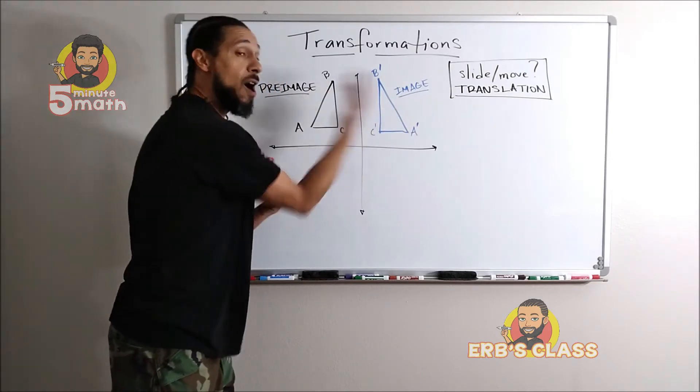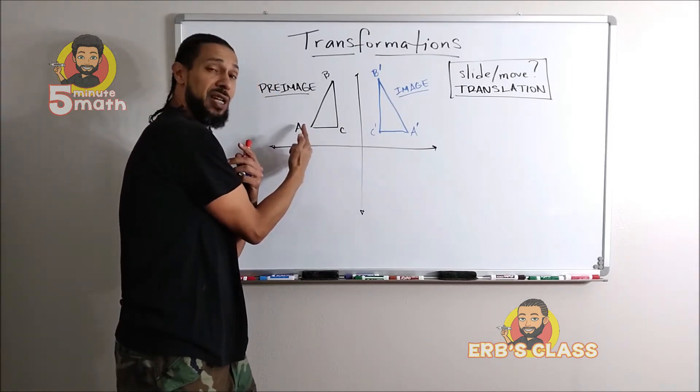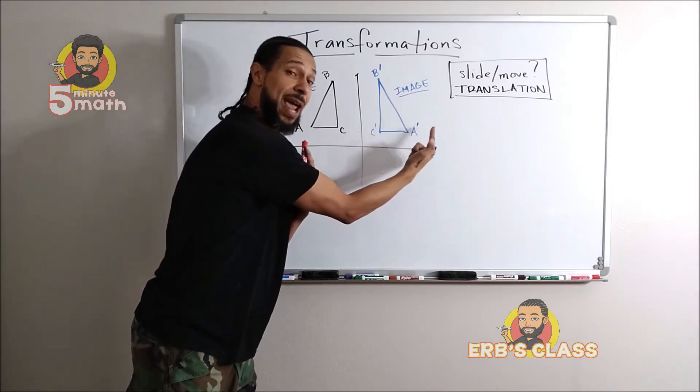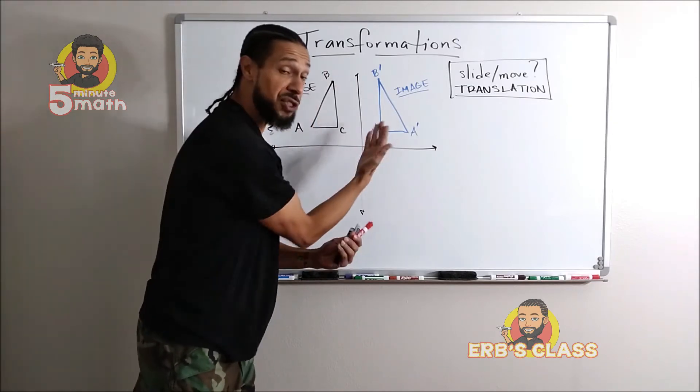When we take an object and we flip it across a line or maybe across an axis, it's actually looking in the mirror. Notice how it's reversing: this C turns into C prime here, this A when it looks in the mirror sees its reflection A prime over here.